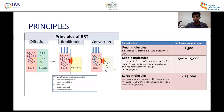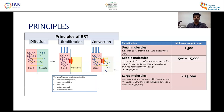The basic principles of RRT include diffusion, ultrafiltration, and convection. Before starting RRT, you should know which molecules you are targeting. Small molecules — urea, creatinine, phosphate — have a molecular weight up to 500 Daltons. Middle molecules — like Vitamin B12, vancomycin, endotoxin — range from 500 to 15,000 Daltons. Large molecules — albumin, myoglobulin — are above 15,000 Daltons.